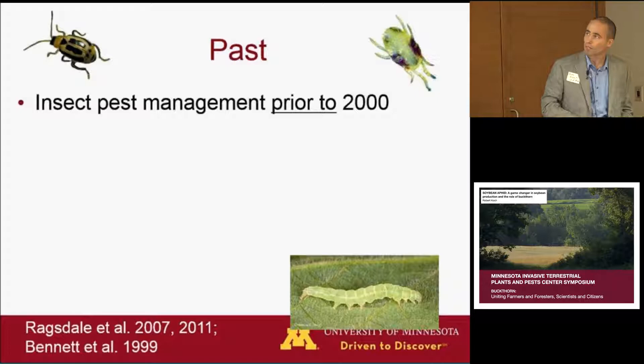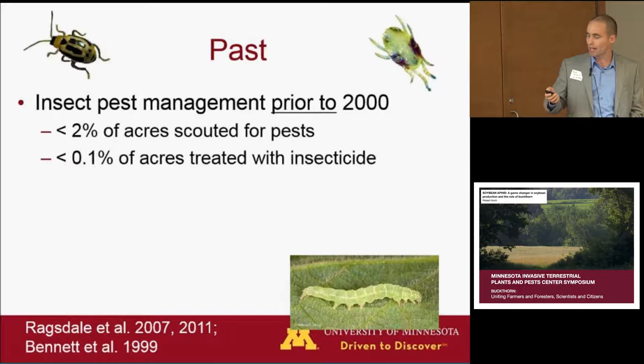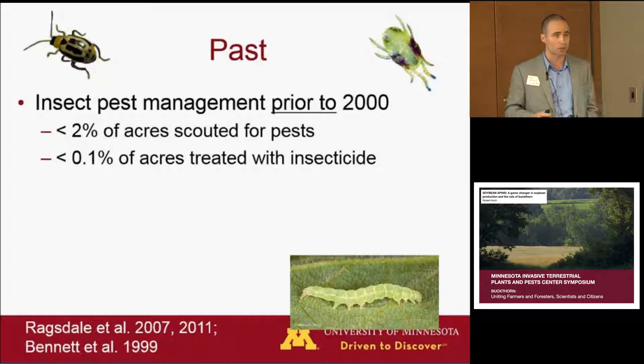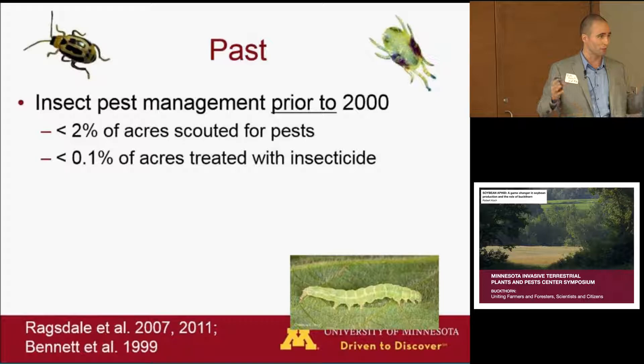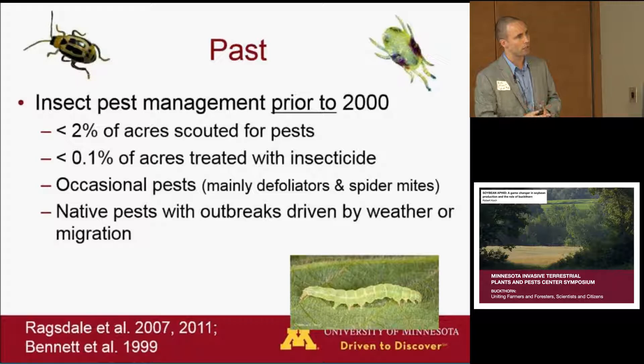In the past, soybean was, from an entomology or insect pest management perspective, a pretty easy crop to grow. Farmers didn't have to worry about many pests. Only two percent of acres were scouted for pests, and less than one percent of acres were treated with insecticide — that's for the north central region. The pests we had were occasional and problematic maybe when certain weather conditions lined up, or drought conditions favorable for things like spider mites.